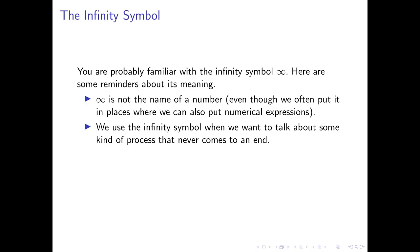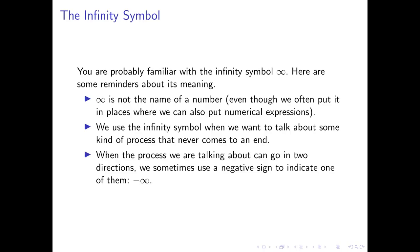An example would be starting from zero and counting up by one — you're never going to hit a last number. We will also sometimes put a negative sign in front of the infinity symbol. A negative sign allows us to keep track of directions. Sometimes we have something that can go on forever in two different directions, and then we can talk about positive infinity and negative infinity to keep track of those directions.